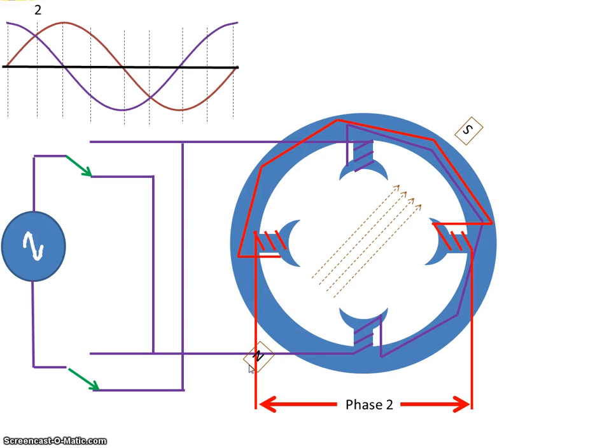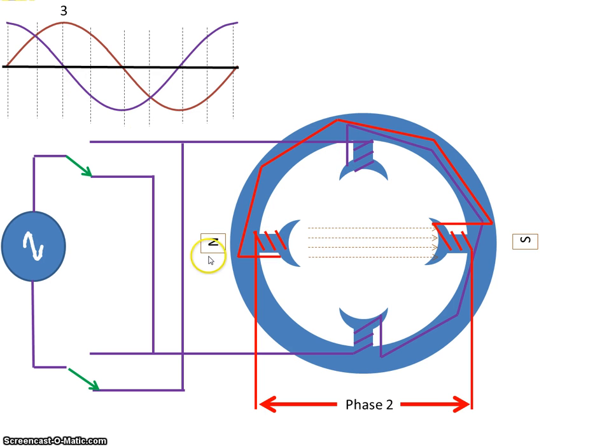Then at time three, it's coming in on this winding, and phase one, this is zero, so our flux lines will be there.